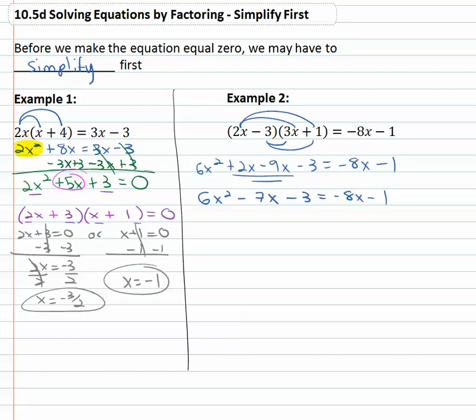Now we want it to equal zero, we like x squared to be positive, it already is positive. So let's move the stuff on the right over to the left by adding 8x to both sides, lining up like terms, adding 1 to both sides and that's going to give us 6x squared plus x minus 2 equals zero. Now we're ready to factor, simplified first, we made it equal to zero, now we're going to factor.